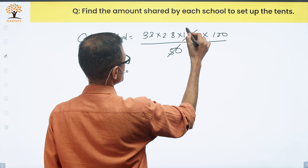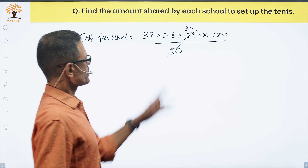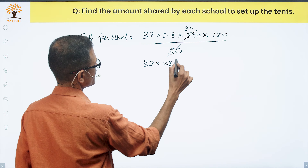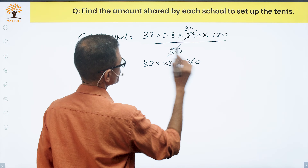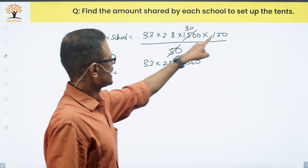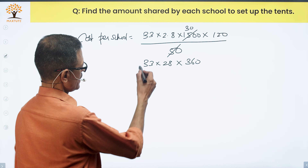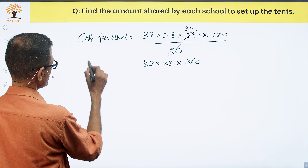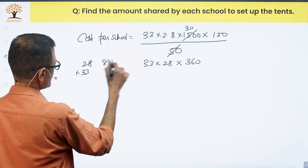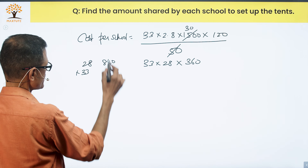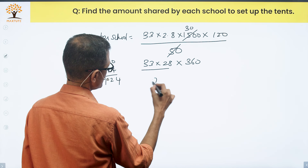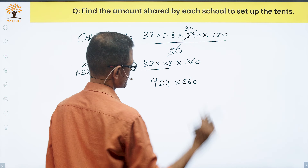So we have 33 × 2.8 × 30 × 120. Since 120 = 3 × 40, rewrite as 33 × 28 × 3 × 360. First, 28 × 33: 28 × 30 = 840, 28 × 3 = 84, total = 924. Then 924 × 360 gives us the final answer.